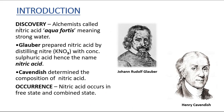First is the discovery. Alchemists called nitric acid aqua fortis — aqua means water, fortis means strong, so meaning strong water. Glober prepared nitric acid by distilling nitre, which is potassium nitrate, with concentrated sulfuric acid, and hence it was called nitric acid.